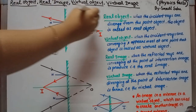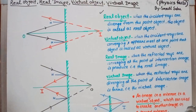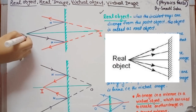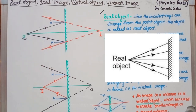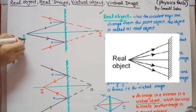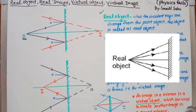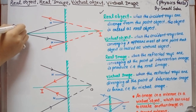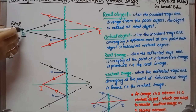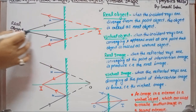First we go to real object. What is a real object? When the incident ray comes from one point, or diverges from one point, at that condition that point object is called a real object. In the case of a real object, the incident ray diverges.